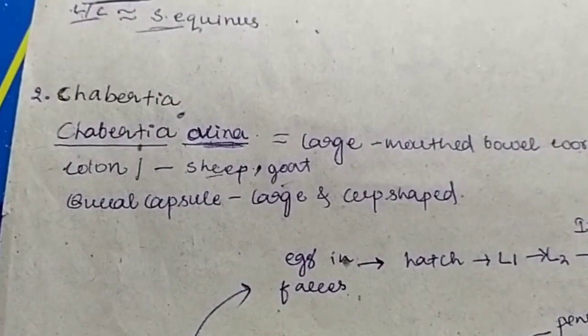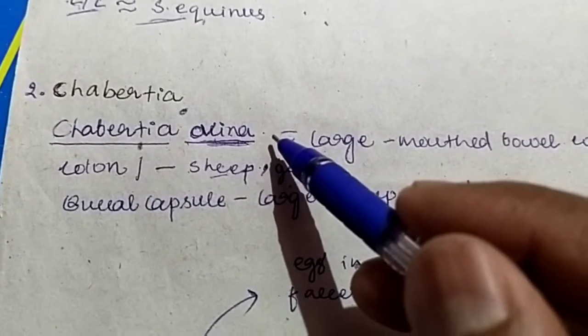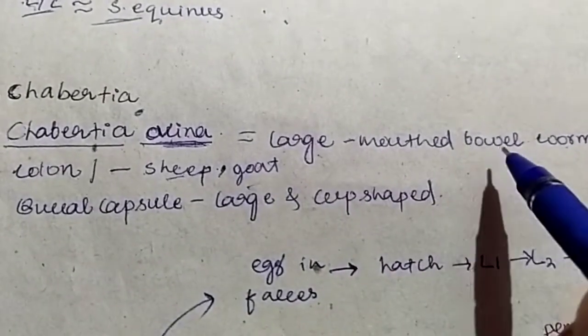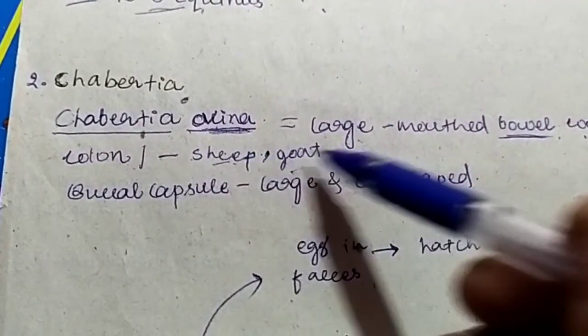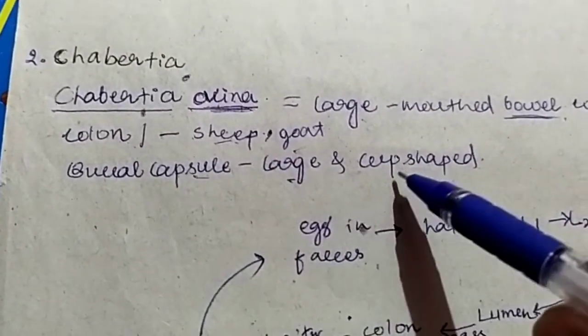There is only one species that is having veterinary importance. The name of that species is Chabersia ovina, which is large-mouthed bowel worm. This bowel indicates this is present in the colon of sheep, goat, and other ruminants. And the buccal capsule is large and cup-shaped.